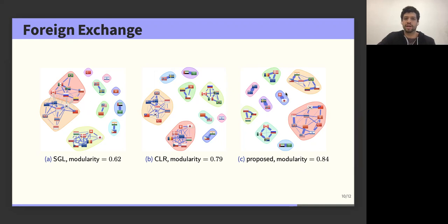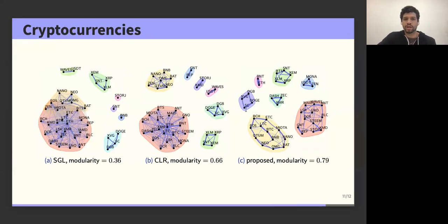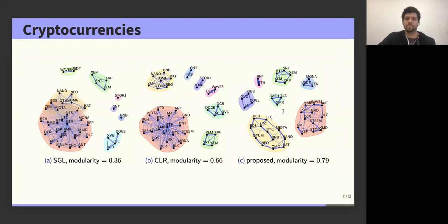For cryptocurrencies, we observe a similar result: SGL and CLR output quite dense clusters with isolated nodes, whereas our Student-t method outputs a more reliable graph. Notably, some clusters are more intuitive — for example, Dash, Zcash, and Monero are clustered together by our method, and these are coins that focus on privacy. There is quite strong evidence indicating that the Student-t distribution is a better model for data coming from cryptocurrencies.